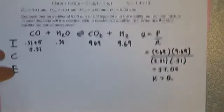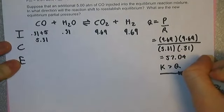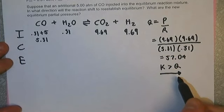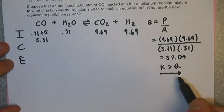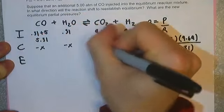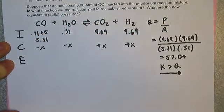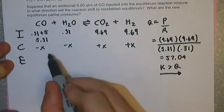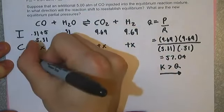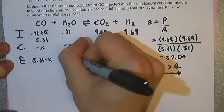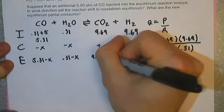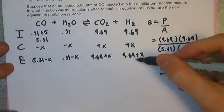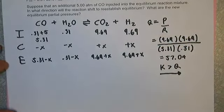Whenever you compare Q and K in this order, K on the left, Q on the right, whichever way this arrowhead points is the way your reaction is going. So in this case, the arrowhead points right, so we have to go right. Minus X, minus X, plus X, plus X. We're going right, so that means if we're going to the right, these appear and these would disappear. So now we just add. This would be 5.31 minus X, 0.31 minus X, 9.69 plus X, and 9.69 plus X.